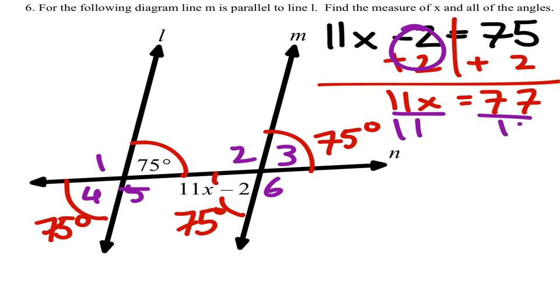Now, since this 11X minus 2 is also 75 degrees, that gives us an equation. 11X minus 2 equals 75 degrees. And so, to solve for X, we would add 2 to both sides, getting 77 equals 11X, because our 2's there cancel out. So to solve for X, we would divide both sides by 11, and we would find that X is 7.